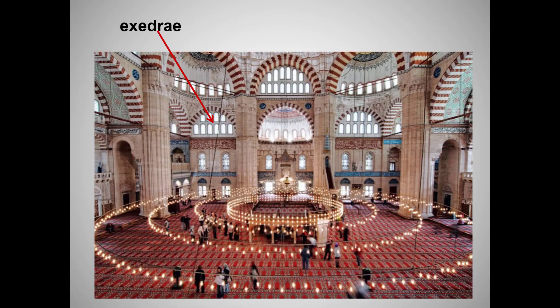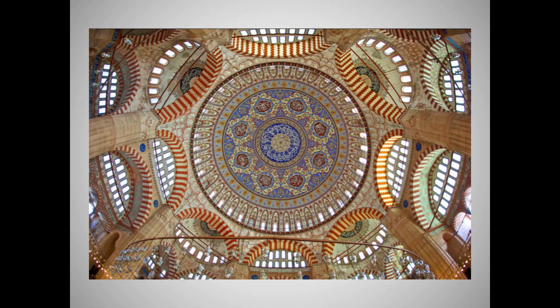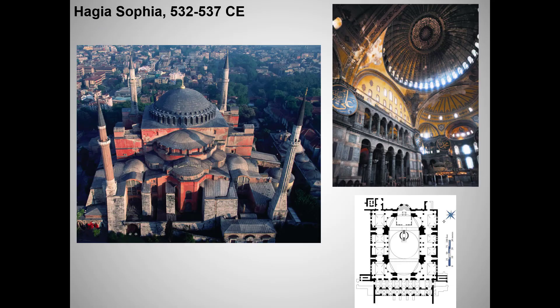Here's a more panoramic view of the huge prayer hall, showing the half domes surrounding the central dome. The areas beneath the half domes are called exedrae — semicircular recesses. Note the striped voussoirs and the tessellated designs in the mosaics. What else echoes the mosque at Cordoba? Again, we see double arches.